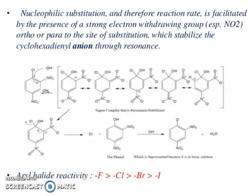Nucleophilic substitution rate is facilitated by the presence of strong electron withdrawing groups, especially at ortho and para positions to the site of substitution, which stabilize the cyclohexadienyl anion through resonance. With two withdrawing groups at ortho and para, there are five resonating structures. Aryl halide reactivity order: fluorine > chlorine > bromine > iodine.